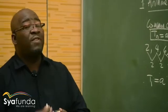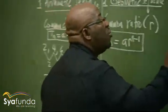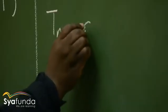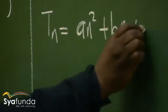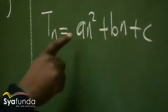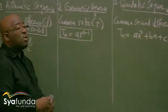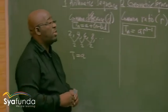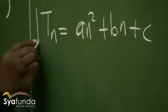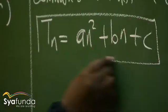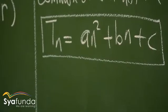What will be the general term of a quadratic sequence? It also has its own general term, which is TN equals AN squared plus BN plus C. Look at this — it is similar to ax squared plus bx plus c. That is why we call it quadratic, because it comes from the quadratic equation. These formulae are important when you respond to questions in any exercise.